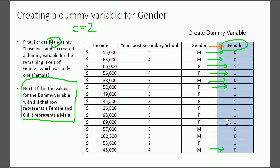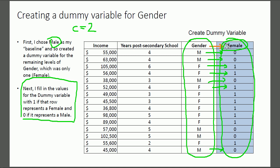In a sense, I've taken a categorical variable I couldn't handle before and made a dummy variable out of it — ones and zeros — which captures all the same information, except now, the dummy variable in blue can be used in multiple regression where the original categorical column could not.